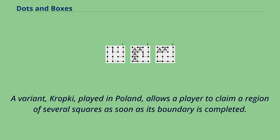A variant, Kropke, played in Poland, allows a player to claim a region of several squares as soon as its boundary is completed.